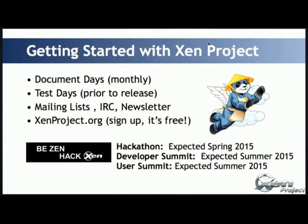We are trying to improve everything about documentation. For the release process, three months before release we have a feature freeze phase where no new features are added and we try to stabilize the code. After that we start shipping release candidates. At every RC we have a Test Day where people try different configurations and look for new bugs. When we find no new major bugs and things seem stable, we call that the release — for example Xen 4.5.